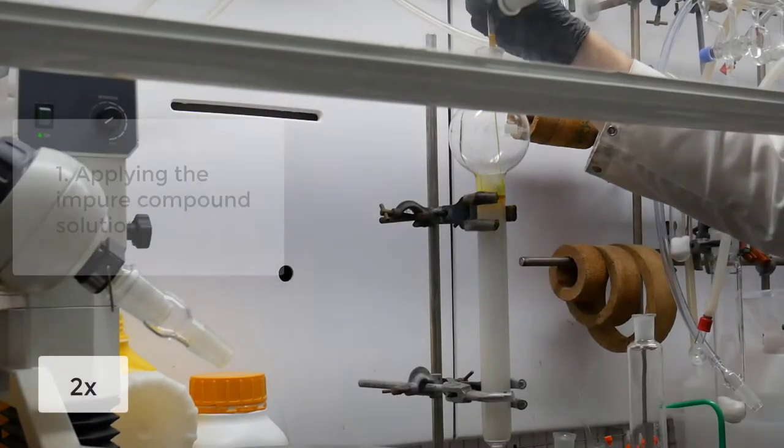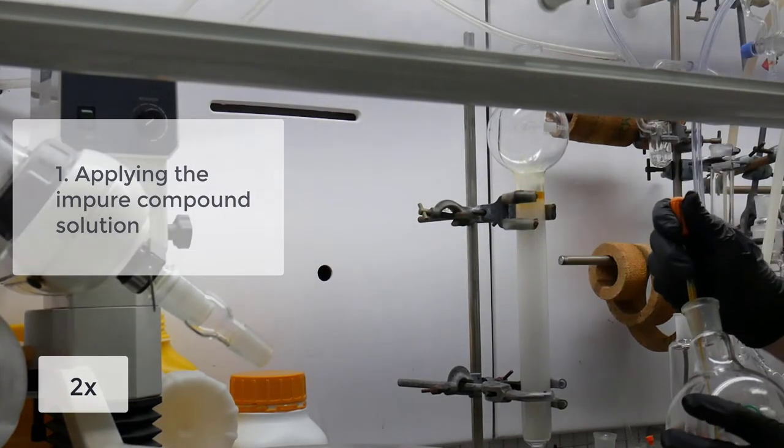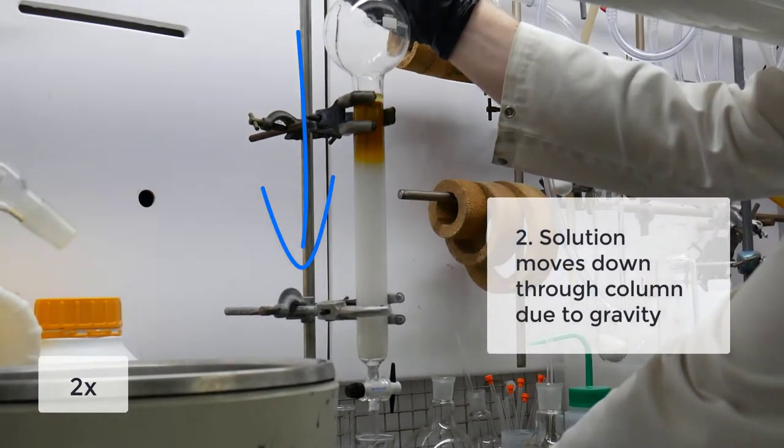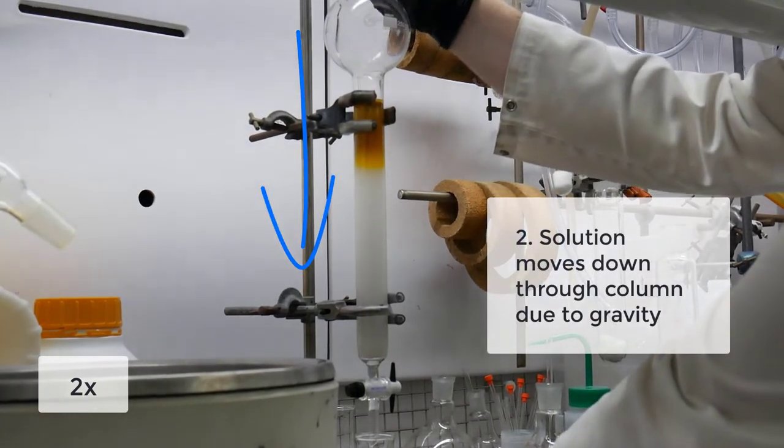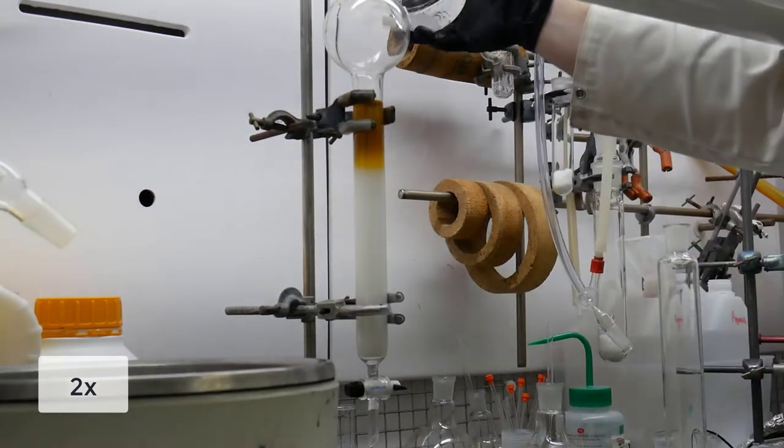Different compounds with different polarities have different affinities to the very polar stationary phase or the less polar mobile phase. If a compound is more polar, it's more likely to stick to the stationary phase and so moves slower through the silica.